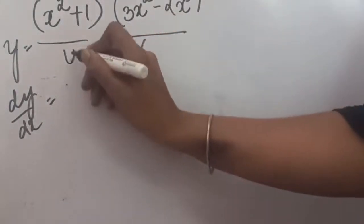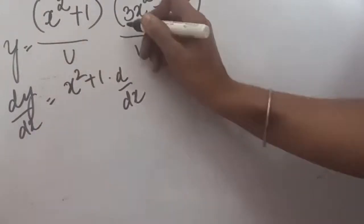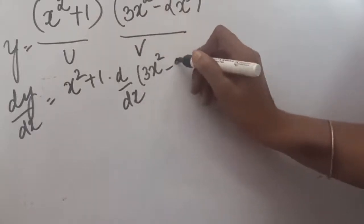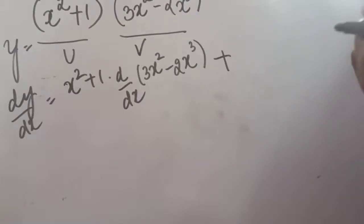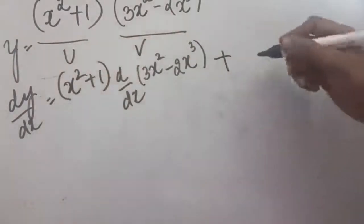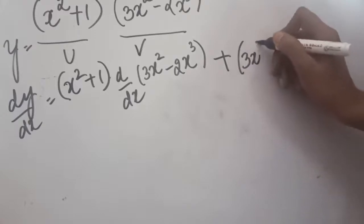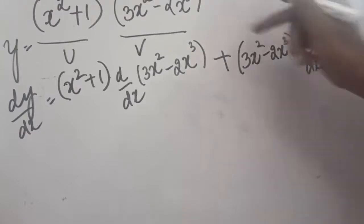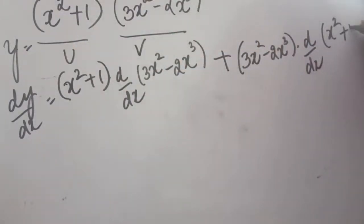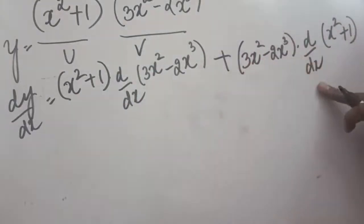Taking the differentiation dy/dx, we apply the formula. u means (x²+1) into the differentiation of v, where v means (3x²−2x³), plus v, that is (3x²−2x³), kept outside, and the differentiation of u, which is (x²+1). So it is: u times d/dx(v), plus v times d/dx(u).